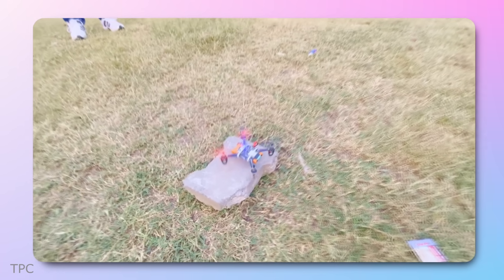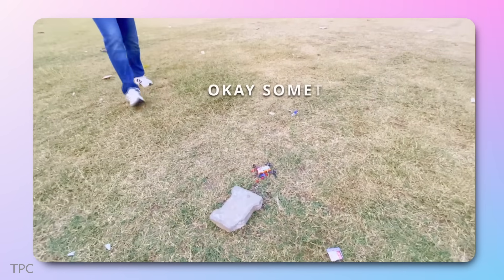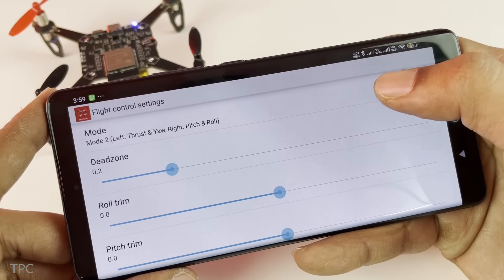During initial testing, the drone struggled to take off. But after tweaking the thrust, pitch, and upgrading to a more powerful battery, it flew smoothly and powerfully, buzzing through the air like a bee. Number 15.